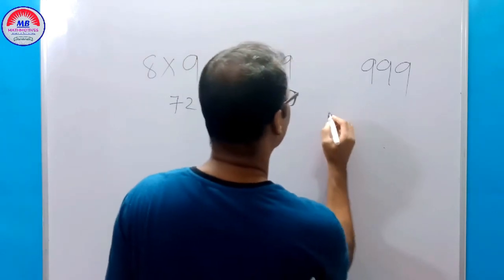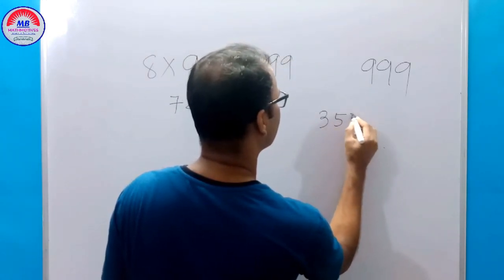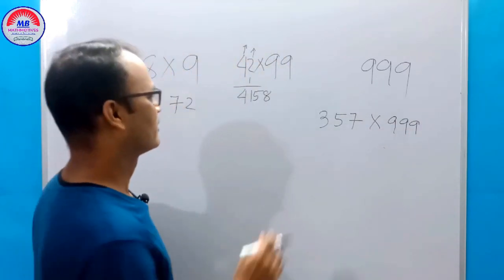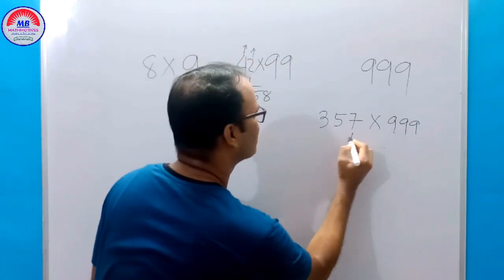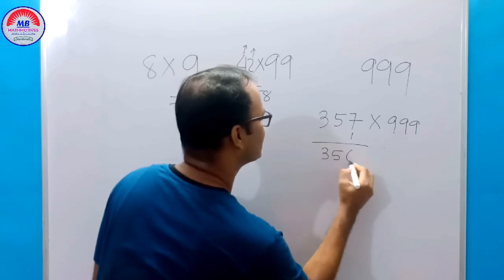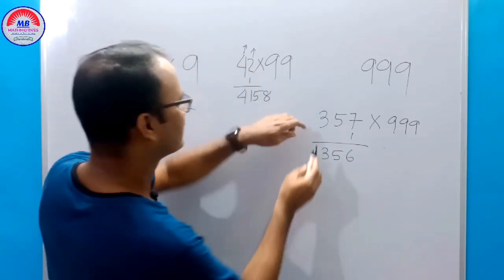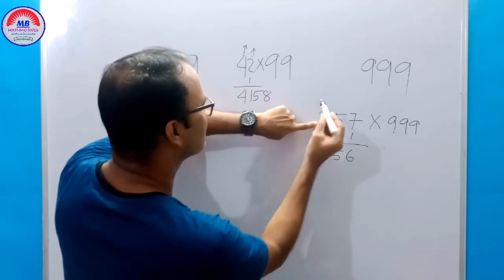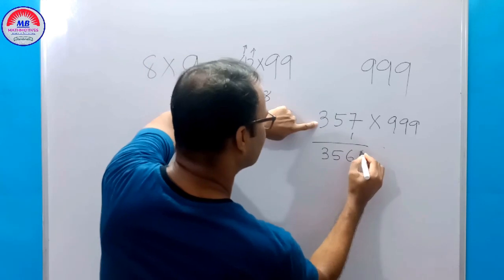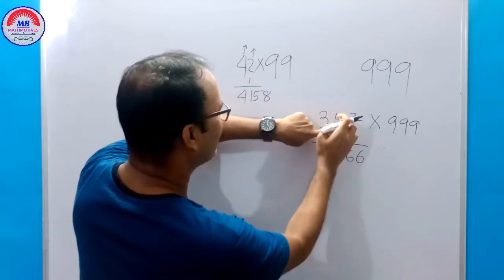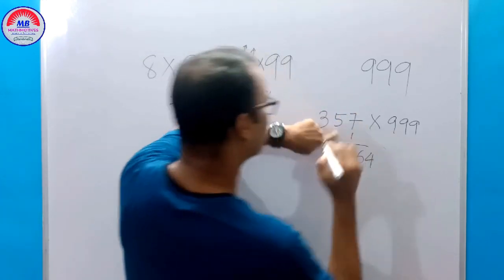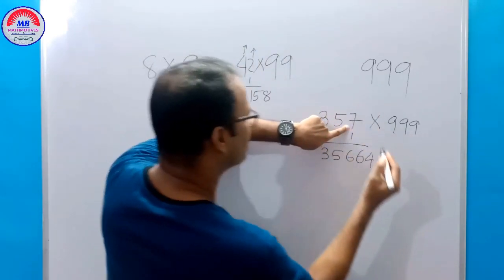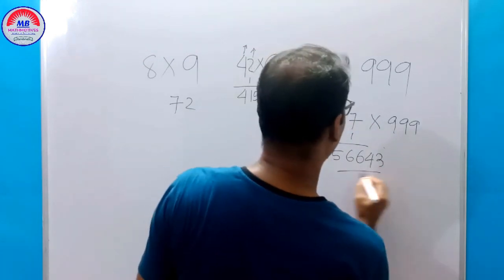Similarly, suppose 357 into 999. Subtract 1 from 357 to get 356. Then subtract each digit from 9: 9 minus 3 is 6, 9 minus 5 is 4. Then the unit digit is always subtracted from 10: 10 minus 7 is 3. That is our answer: 356643.